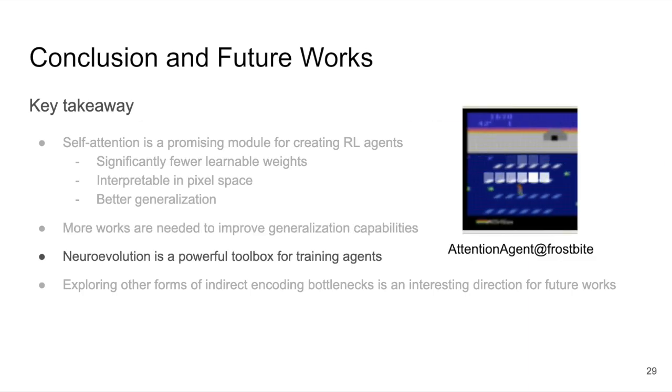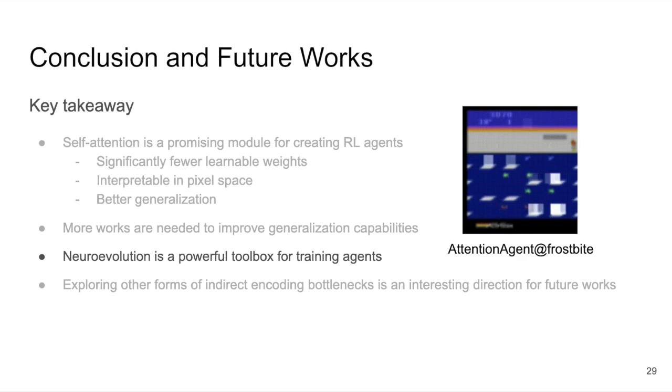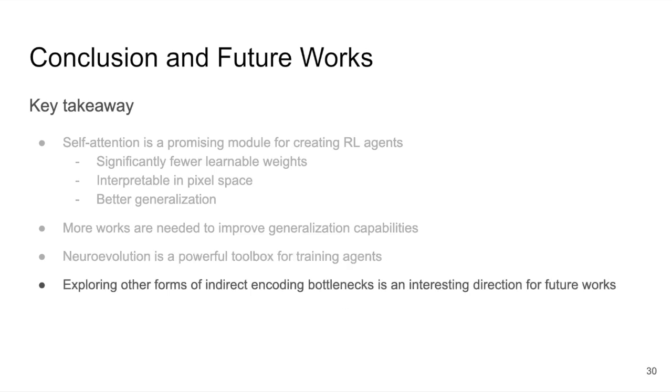In this work, we find neuroevolution to be a powerful toolbox for training agents, yet its adoption in RL is limited. We expect more neuroevolution trained agents in the future, and it would be exciting to see how these agents would perform in vision-based tasks that are currently dominated by deep RL algorithms in the existing literature. We also established the connections between indirect encoding methods and self-attention. Specifically, we show that self-attention can be viewed as a form of indirect encoding. Another interesting direction for future works is therefore to explore other forms of indirect encoding bottlenecks that, when combined with neuroevolution, can produce parameter-efficient RL agents that exhibit interesting innate behaviors.